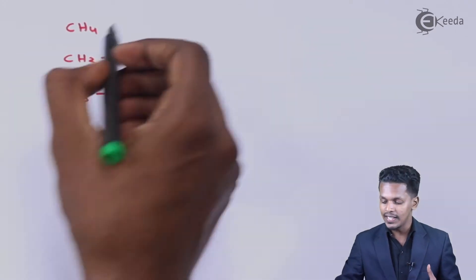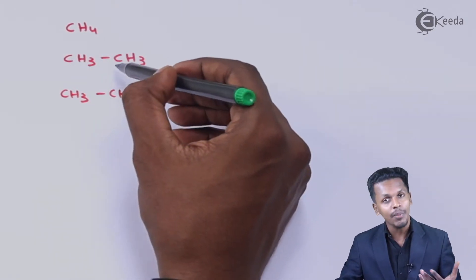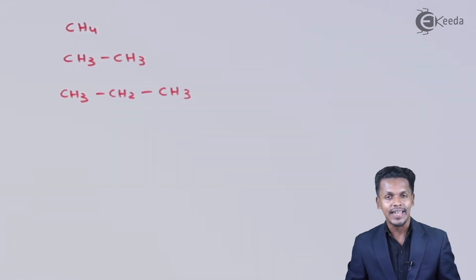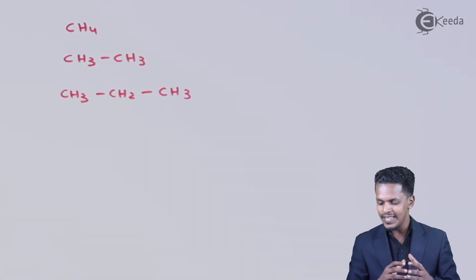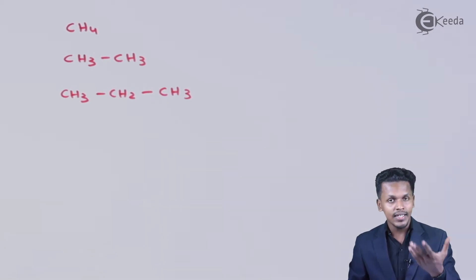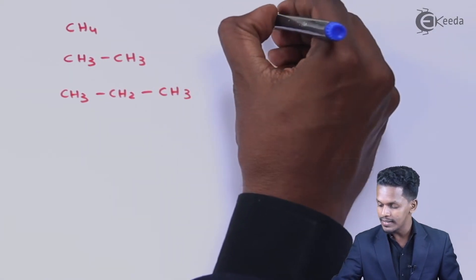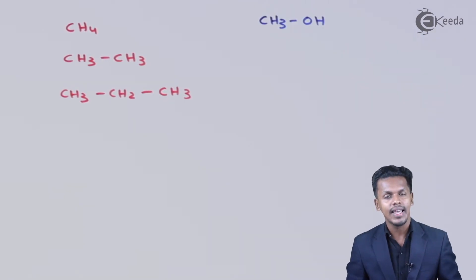The CH2 group is the difference between two successive members of the alkane series, and this is what is basically known as a homologous series. It is not only for alkanes — it could be for any organic compound which consists of the same functional group. For example, suppose we are concerned with methanol, written as CH3OH, which is the first member of the alcohol series.